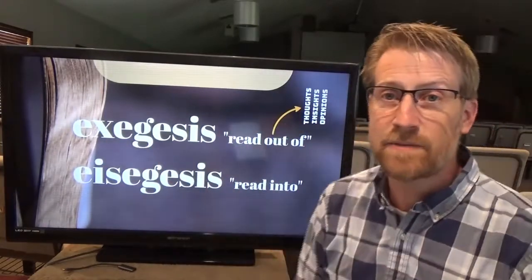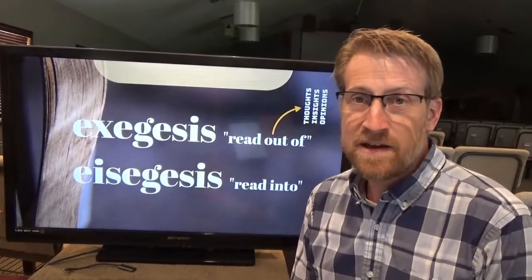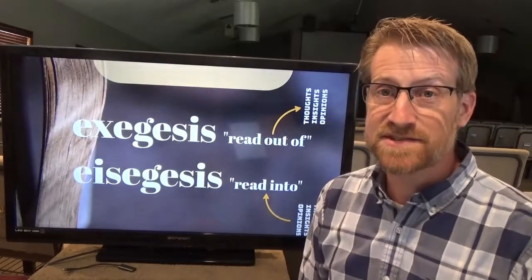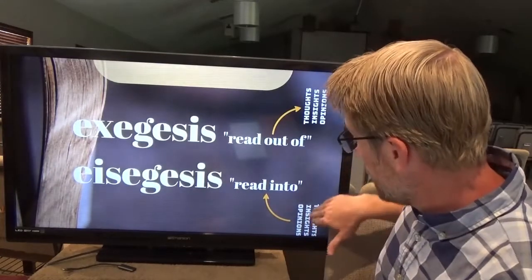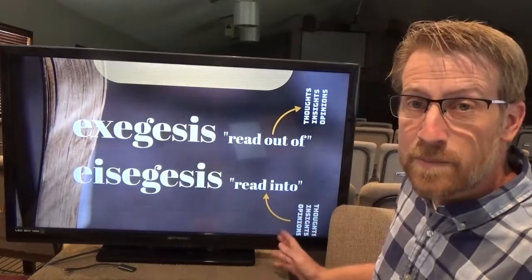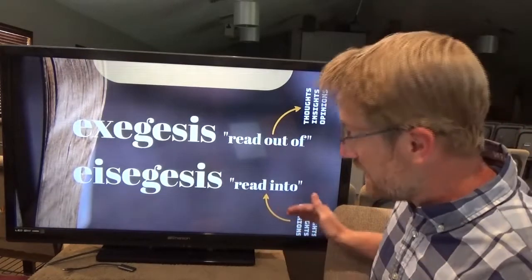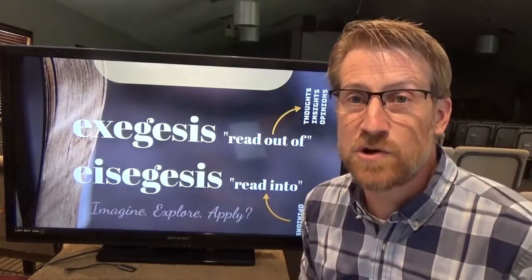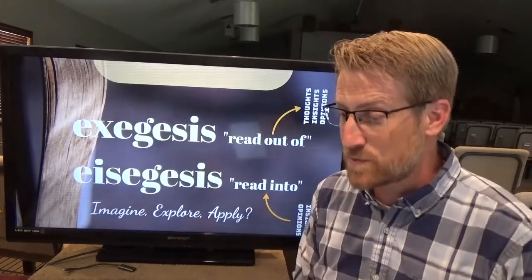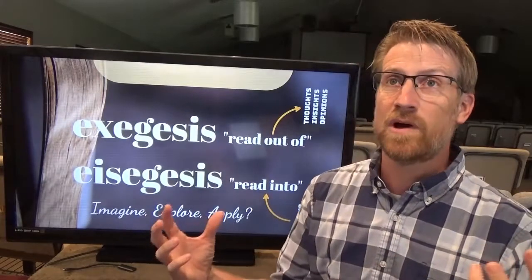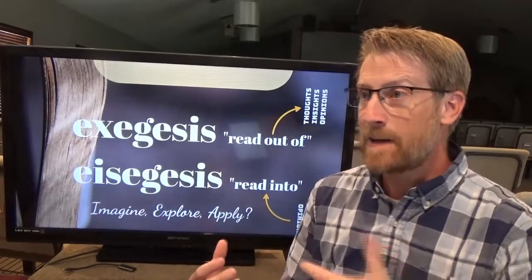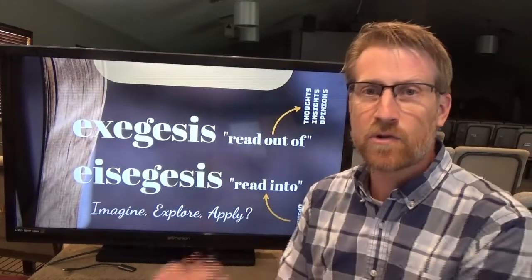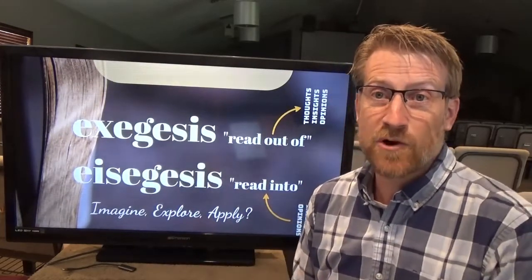Let me introduce two words commonly used when talking about interpreting Scripture. One is exegesis — that means to read something out of a text. When we exegete a text, we find thoughts, insights, and understandings based on what the text said; we're reading out of that passage. The opposite is a word called eisegesis — that's taking my own thoughts, insights, and opinions and reading them into the text. I joke that the steps for eisegesis would be: imagine what I want the Bible to say, explore it for something to back that up, and then apply it. That is eisegesis, and it's not what we want to do.